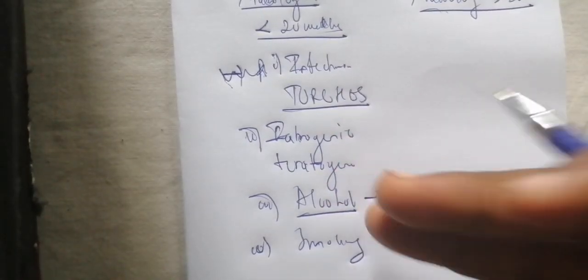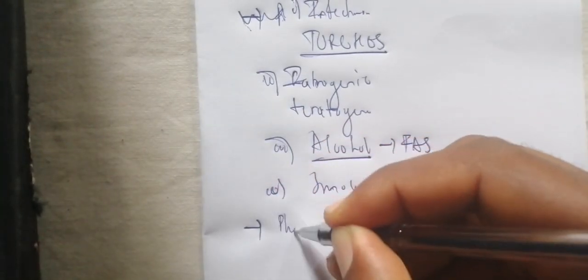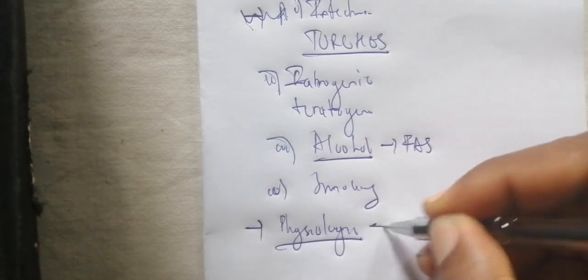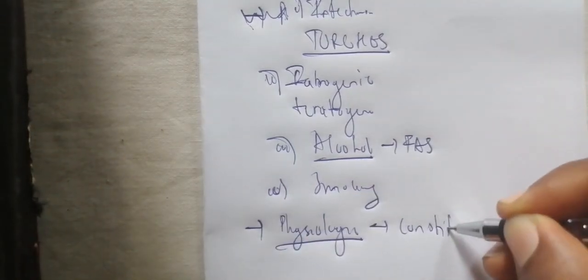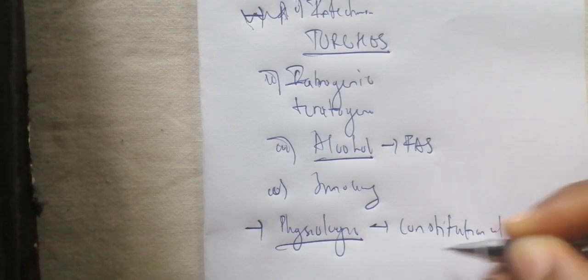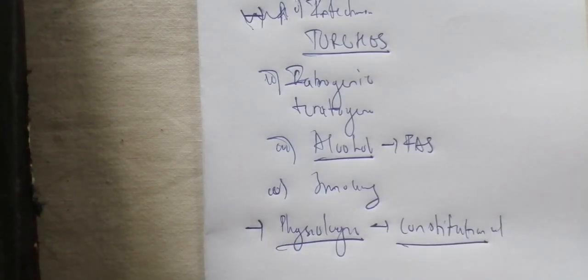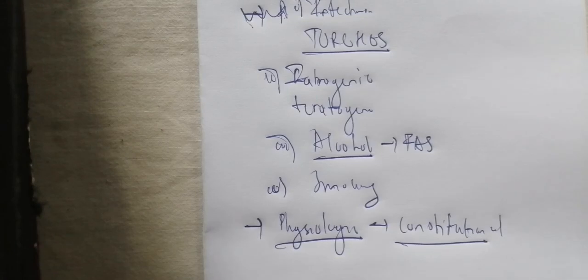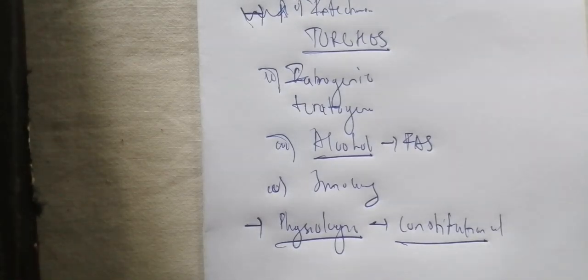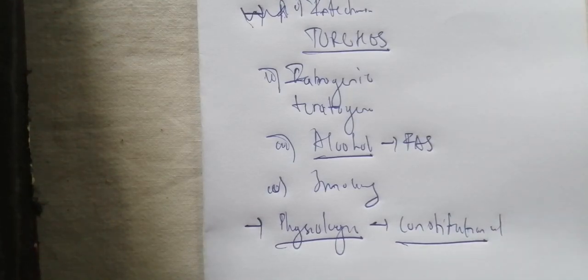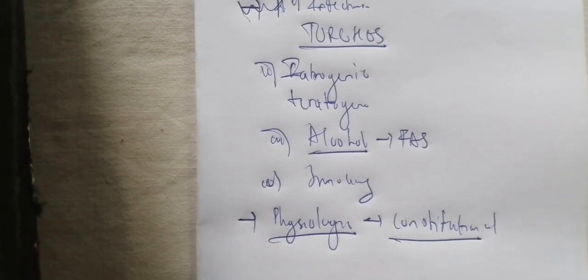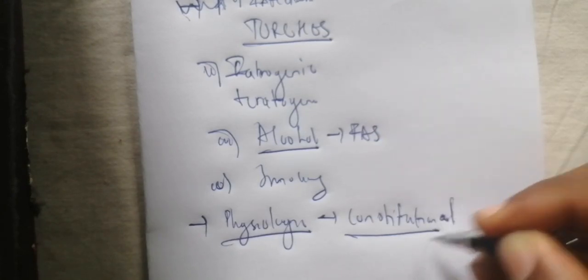Symmetric intrauterine growth restriction can also be physiologic rather than pathologic — specifically in cases where it is constitutional or familial. For example, in Cameroon there is a group called the Pygmies where constitutional symmetric intrauterine growth restriction is normal for that tribe. So it is not a pathology but rather a characteristic of that population.